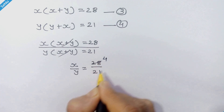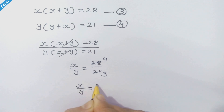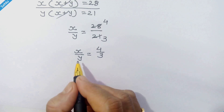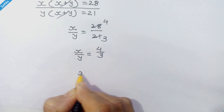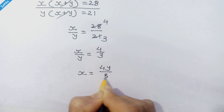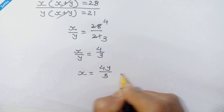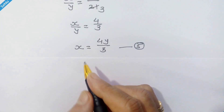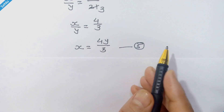Now, 7 fours are 28 and 7 threes are 21, so we have x upon y is equal to 4 upon 3. Let's isolate x by moving y to the right-hand side, so x is equal to 4y upon 3. Let's call this equation 5.